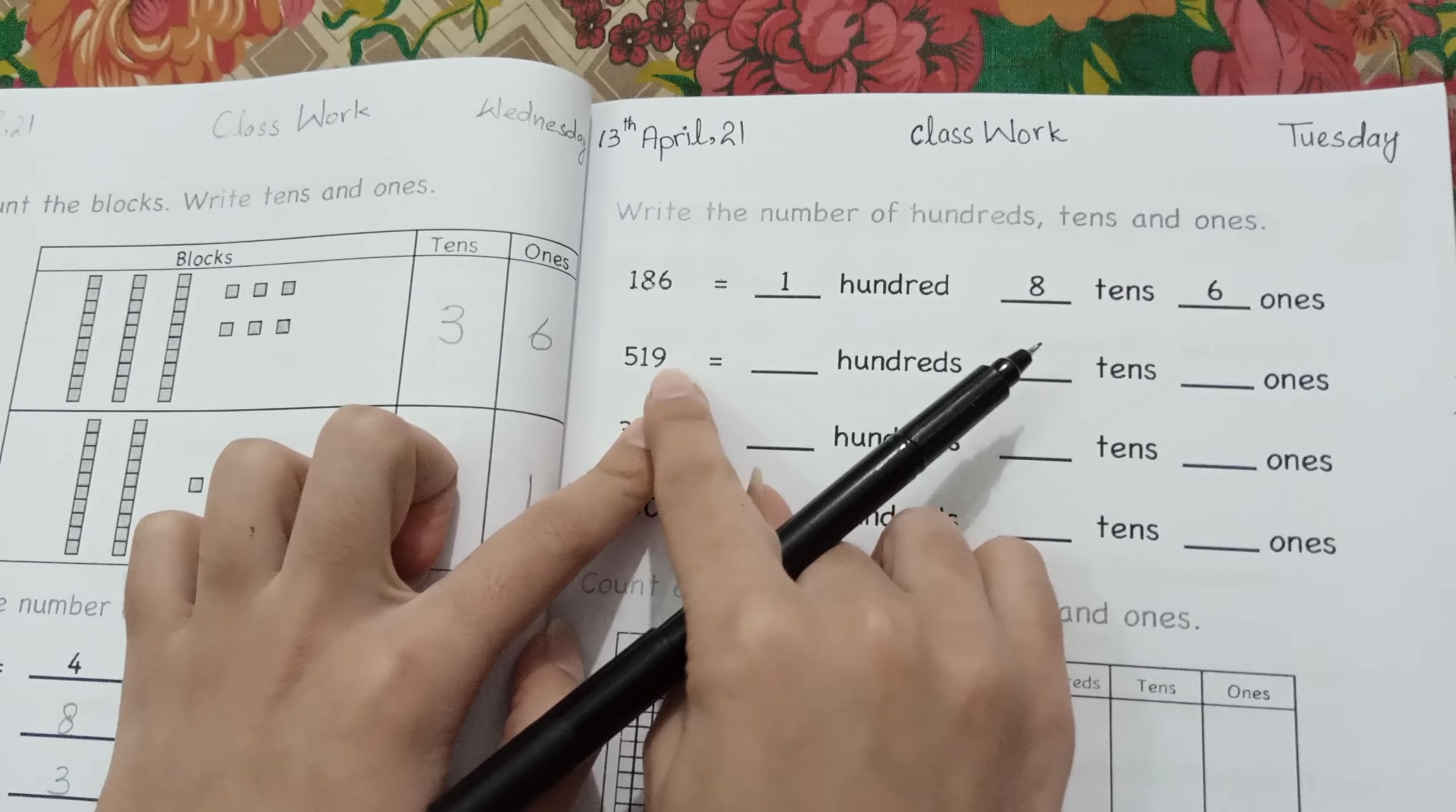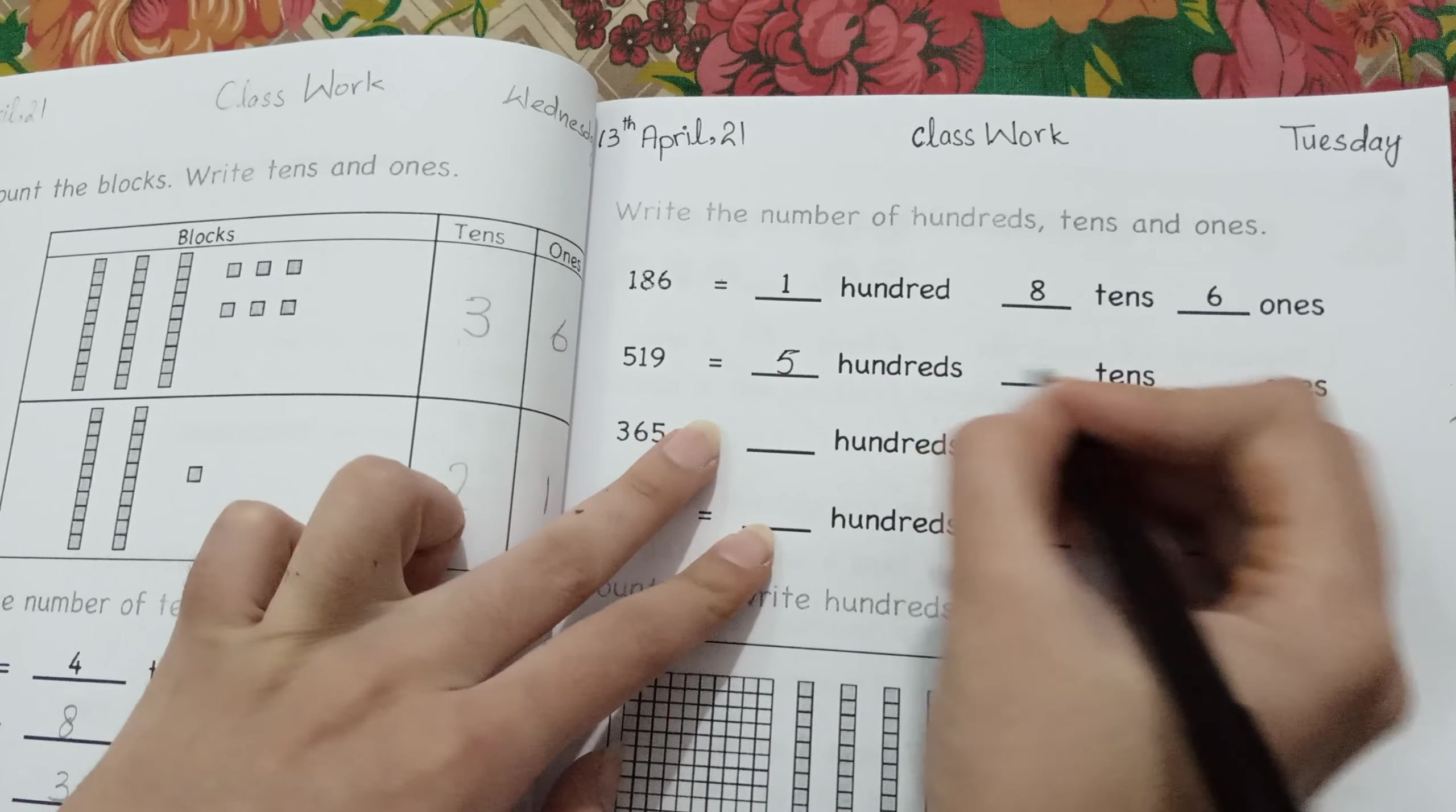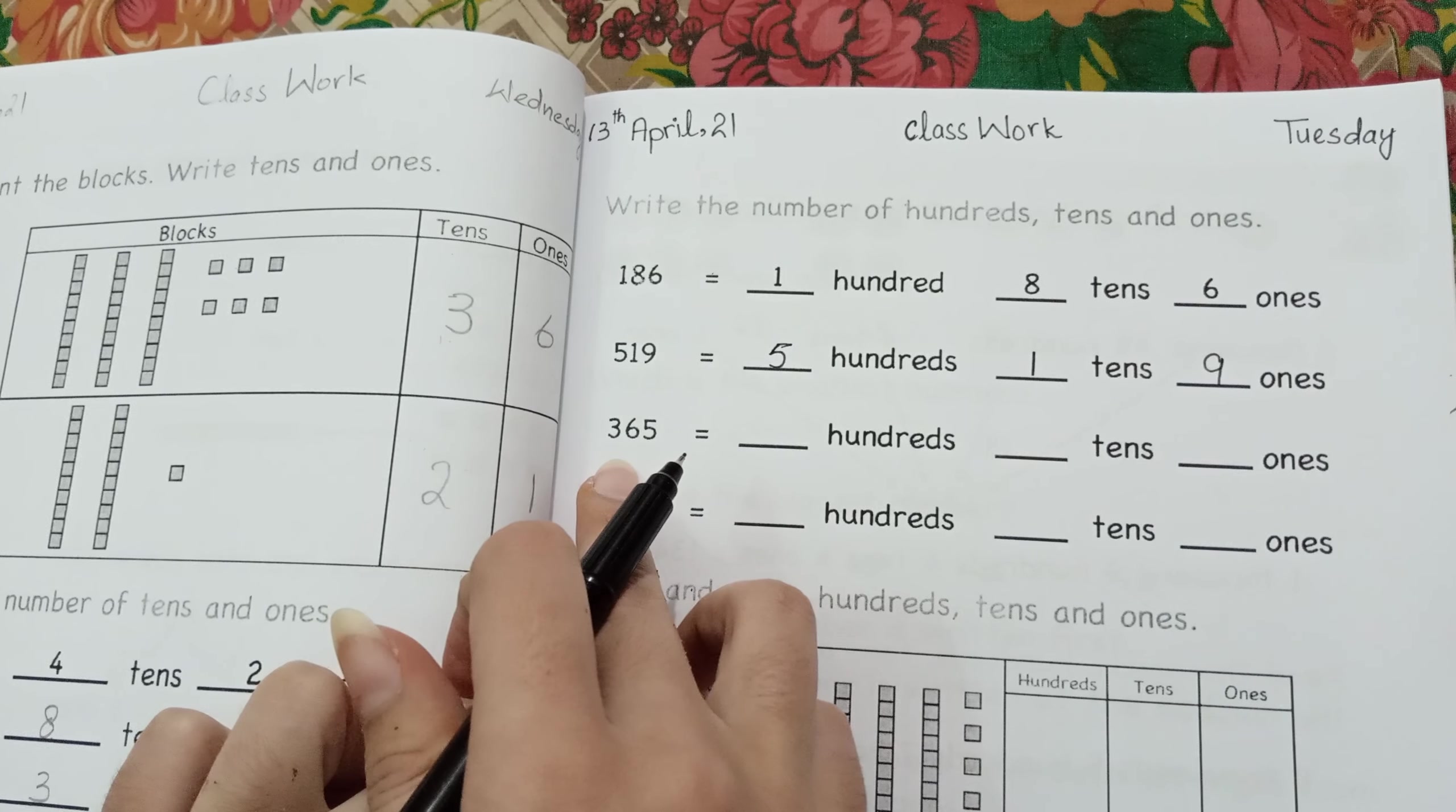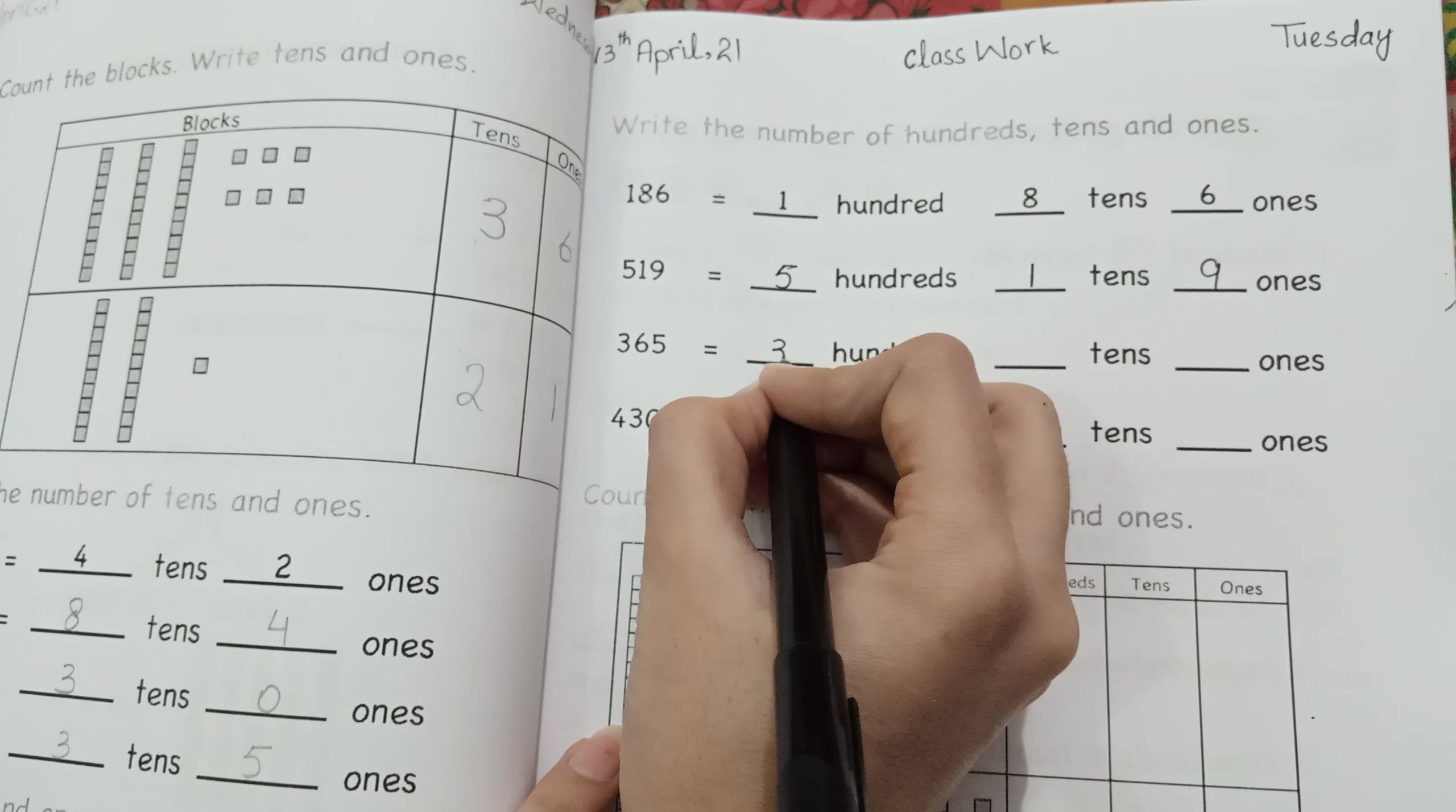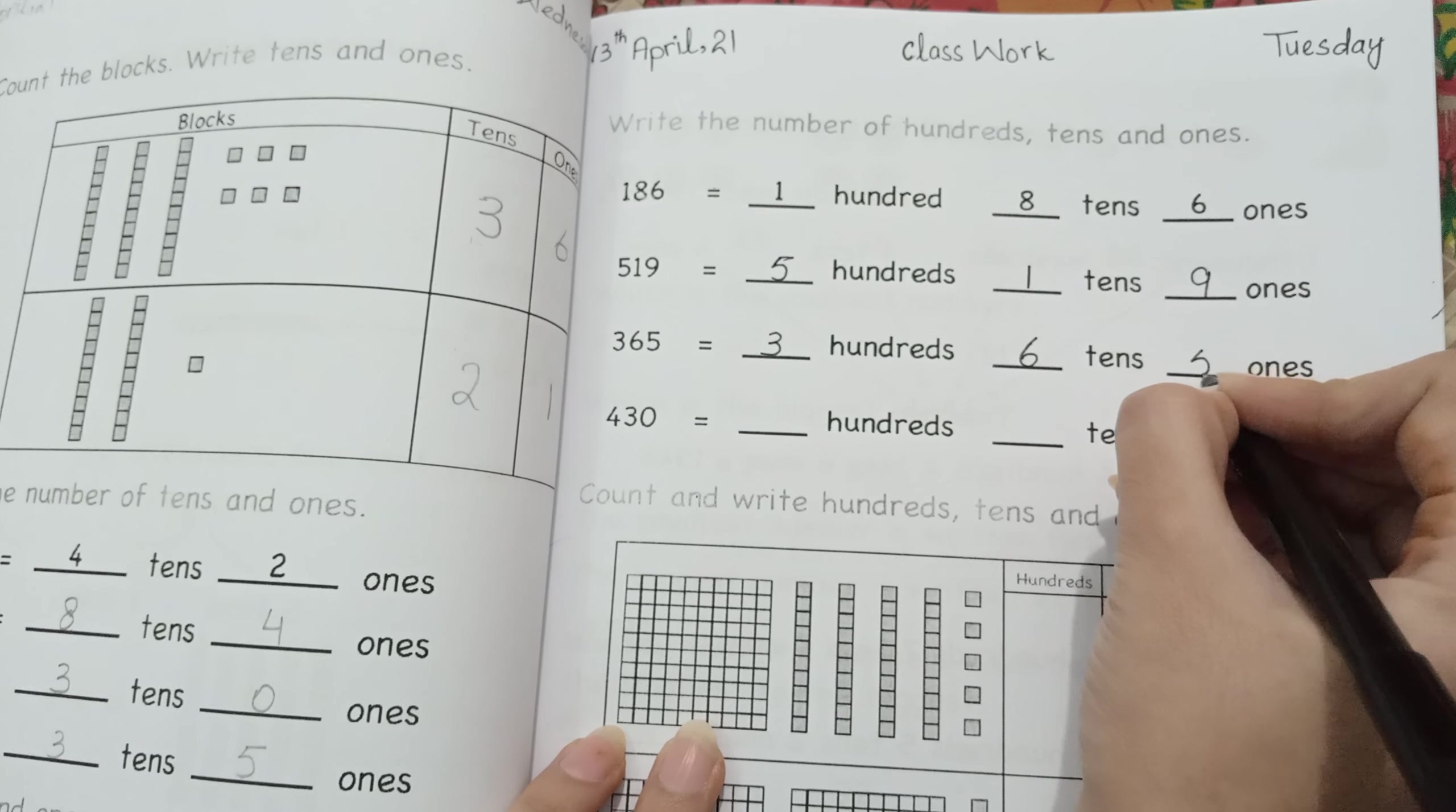Now we will write in the table. Here we will write this, then we will write this, then we will write this. In tens, we will write here.